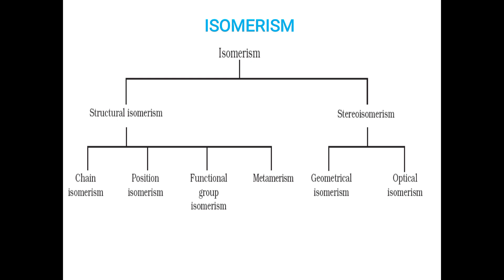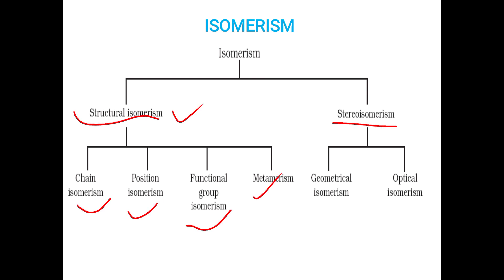Isomerism is mainly classified into two types: structural isomerism and stereoisomerism. Structural isomerism is the isomerism in the structure — the difference is only in the structure. It is further classified into chain isomerism, position isomerism, functional group isomerism, and metamerism. Stereoisomerism is about optical activity — that is geometrical isomerism and optical isomerism.